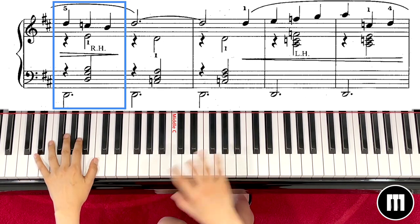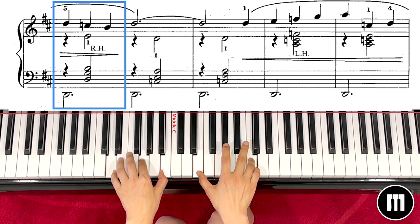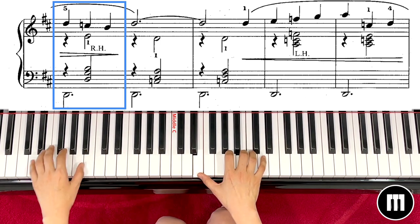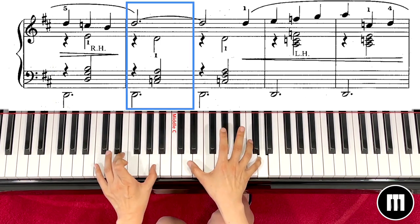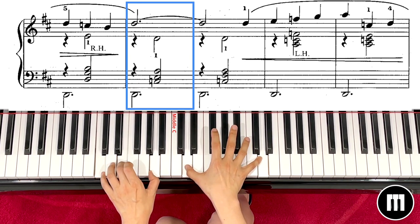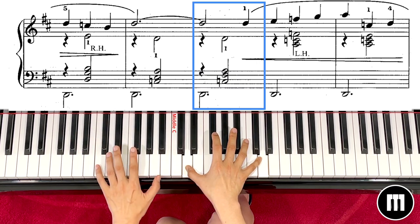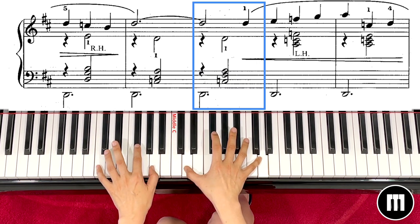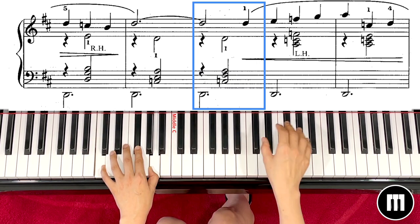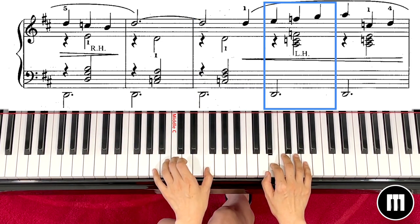So if I play that measure again, like this: D and over left hand C E A and right hand will be D. Two left hand, and then again C F sharp A and right hand D.